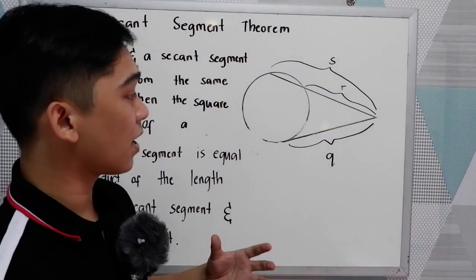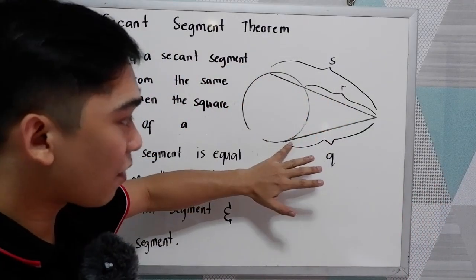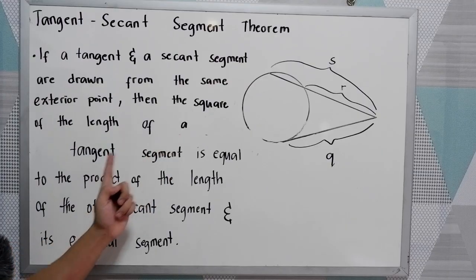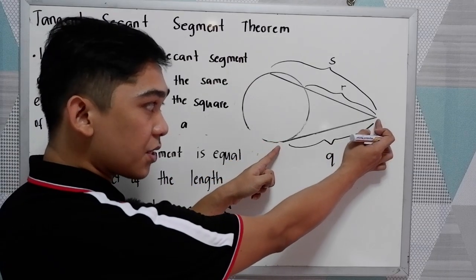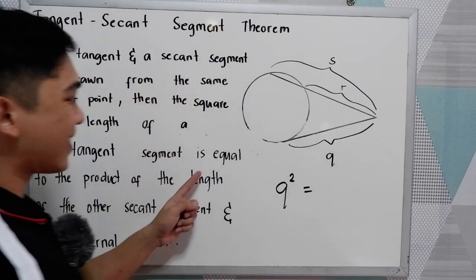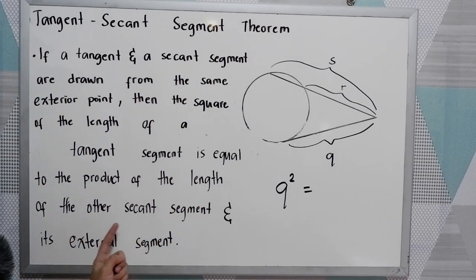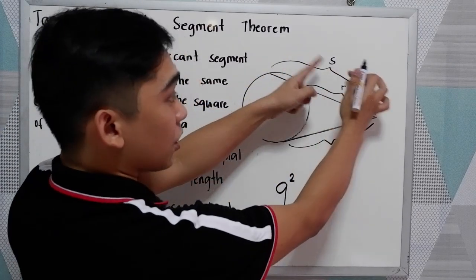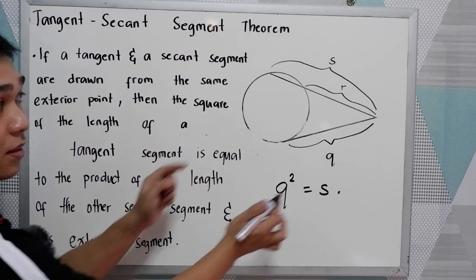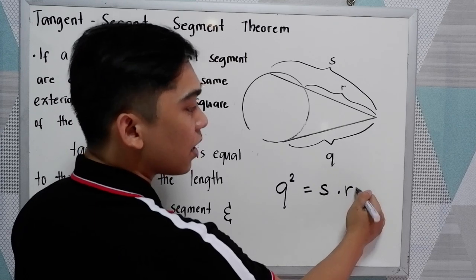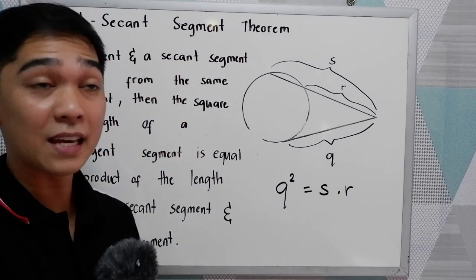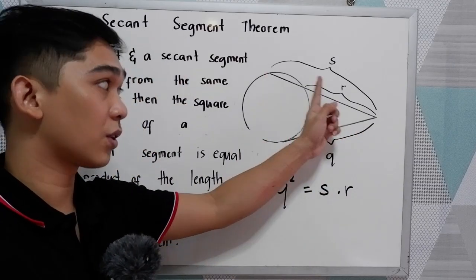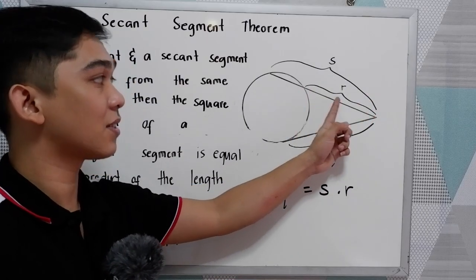To illustrate our theorem, let's say we have this circle with a tangent segment and a secant segment. The square of the length of the tangent segment — our tangent segment here is Q, so Q is squared — is equal to the product of the total length of the secant segment, which is S, times its external segment, which is R. So Q squared equals S times R.